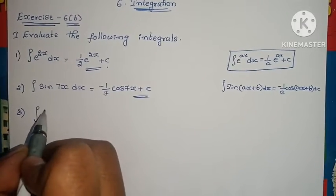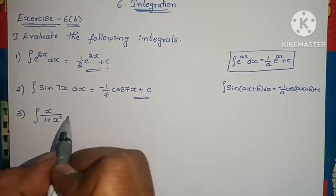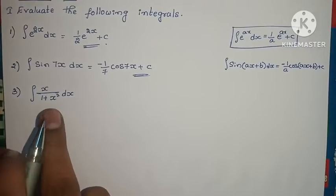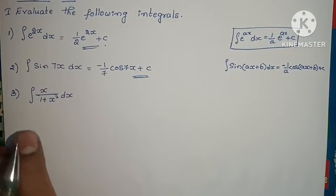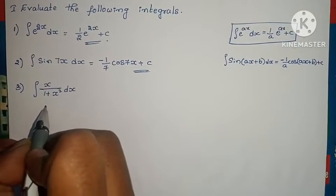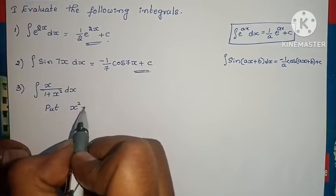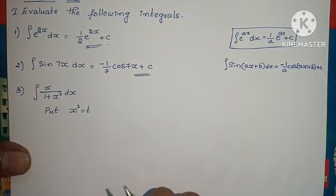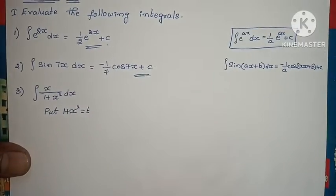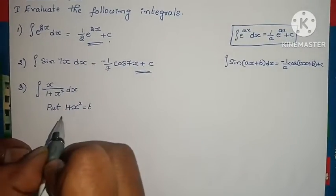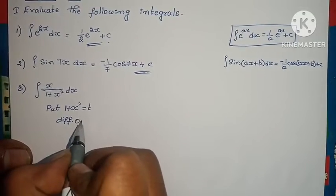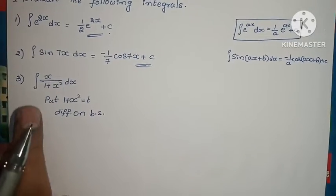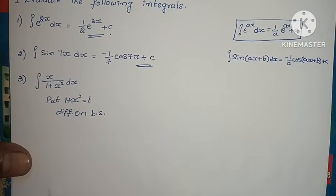Next, third one: integral of x/(1 + x²) dx. Let's solve this step by step. Notice that x² is in the denominator. If we differentiate x², we get 2x. So let's put 1 + x² equals t, so the whole denominator becomes t. Differentiating on both sides — as shown in the last video's example problem, put 1 + x² = t and differentiate both sides.